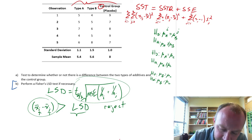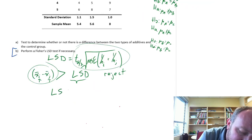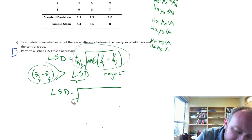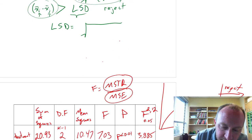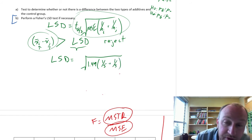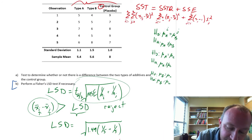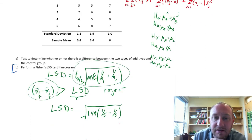Let's squeeze this in, scroll down a little bit, let's fit this in here, our LSD. We need our MSE from our ANOVA, which we calculated here was 1.49 times 1 over 5, 1 over 5, those are our sample sizes, regardless of which two we're comparing, our sample size is still 5,